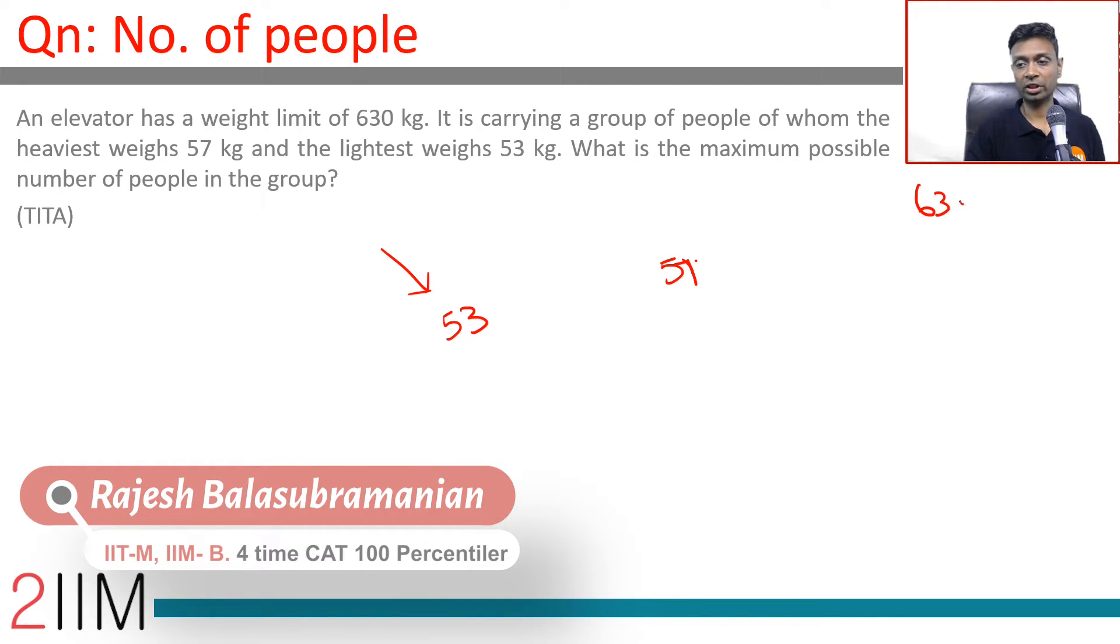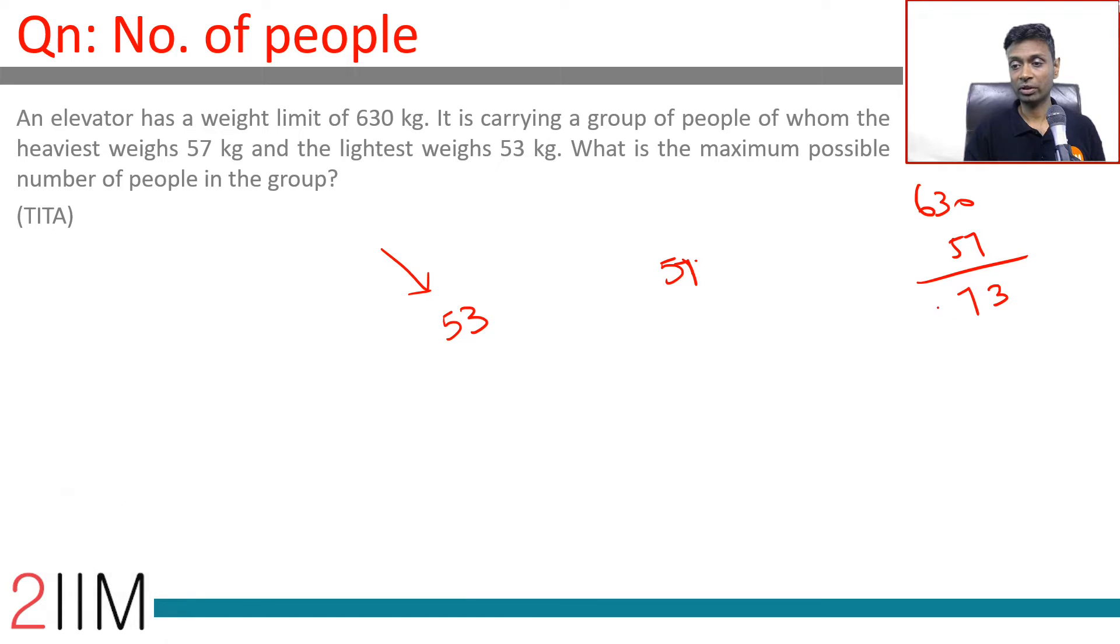Out of 630, subtract 57. 10 minus 7 is 3, 12 minus 5 is 7, equals 573. Now there's one person who weighs 57, set aside that person, and then the remaining all should weigh 53.